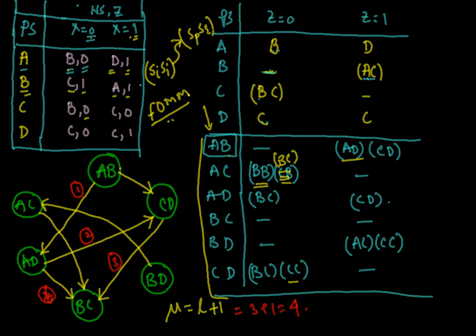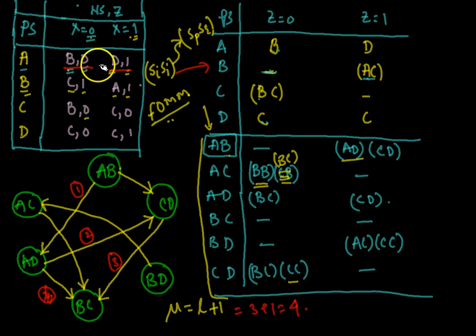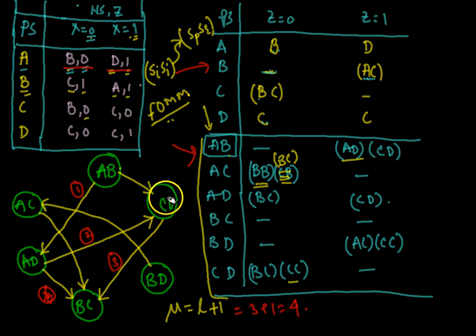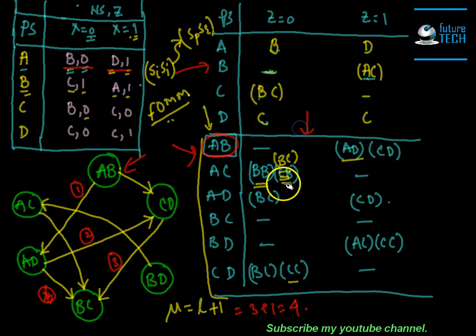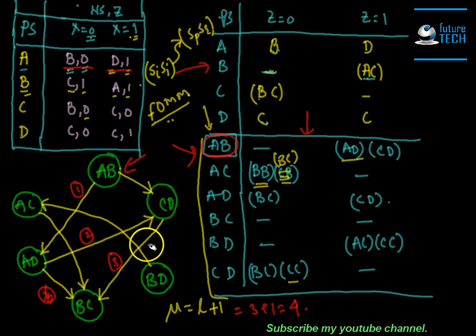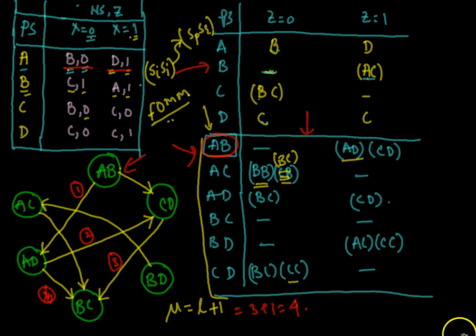In summary, to determine whether a given machine is a finite output memory machine: draw the output successor table as the upper part of the testing table based on the machine's outputs, then develop the lower part using pairs of states. Use those state pairs as vertices to draw the testing graph. If the graph contains a loop, it is not a finite output memory machine; otherwise it is. Find the longest path, add one, and you get the order μ. Thank you for watching.